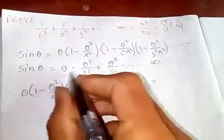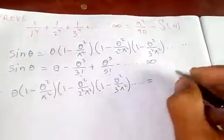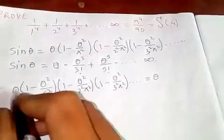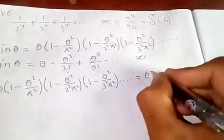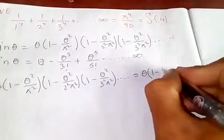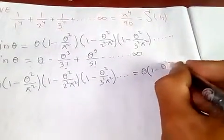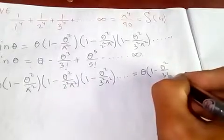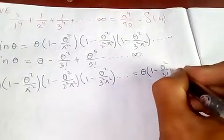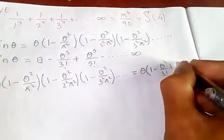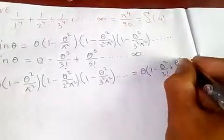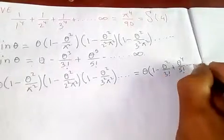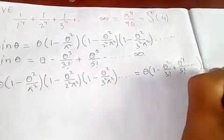Taking θ common, the θ factors cancel, and we are left with 1 minus θ squared over 3 factorial plus θ to the 4 over 5 factorial minus and so on.